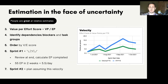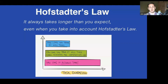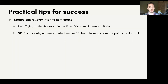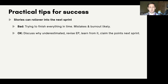What is your velocity? For a team of two people, maybe 60 effort points in two weeks. Do take into account Hofstadter's Law: it always takes longer than you expect, even when you take into account Hofstadter's Law. Moving on to some practical tips and tricks from the last 12 months of me trying this as a total newcomer. Stories can roll over into the next sprint — if you haven't finished something, just roll it over. Don't try to get your team to finish everything in time. Communicate upwards carefully, and understand that things change. Bugs happen. Data science is literally research and development. Allow for that uncertainty — don't make your teams burn out trying to hit sprint deadlines. Discuss why your teams underestimated, revise effort points going into the next sprint, and learn from that.